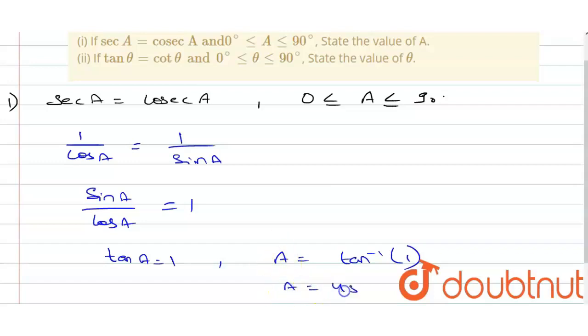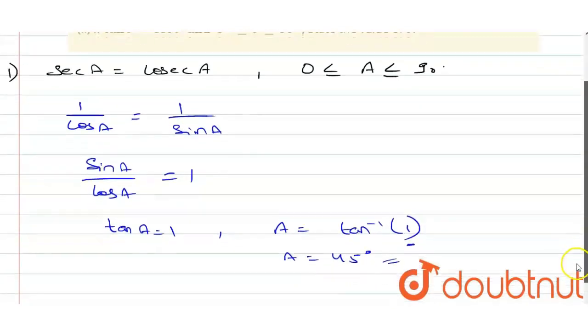That means the value of tan is 1 when tan is 45 degrees, so A is equivalent to 45 degrees. Now let us look at the second question.